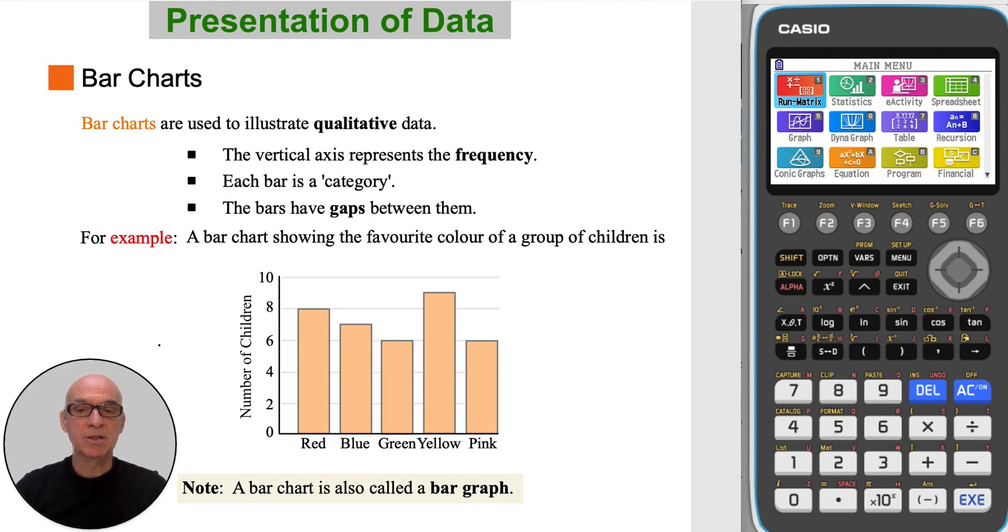Bar charts are used to illustrate qualitative data. The vertical axis represents the frequency, and each bar is a category. The bars have gaps between them. In the example, the bar chart shows the favorite colour of a group of children. Note that the bar chart is also called a bar graph.